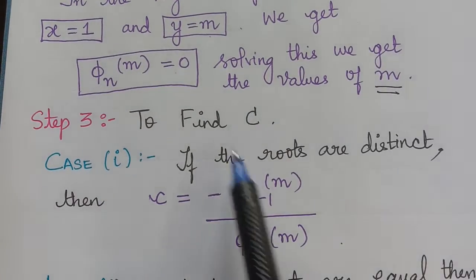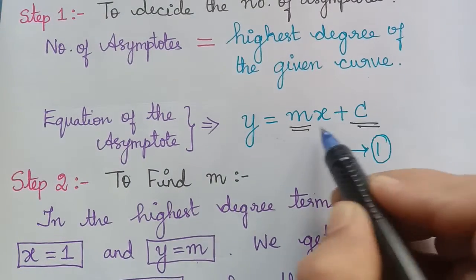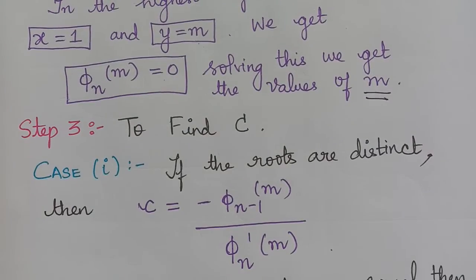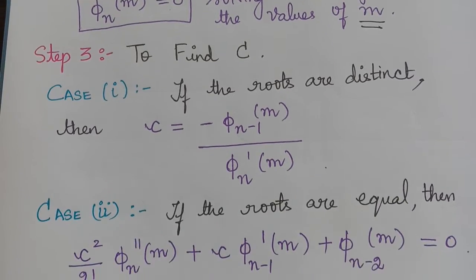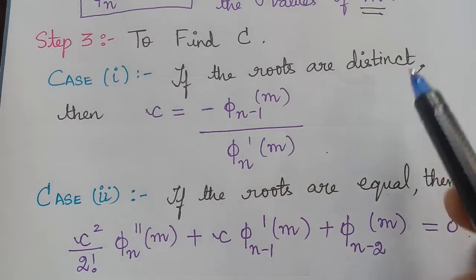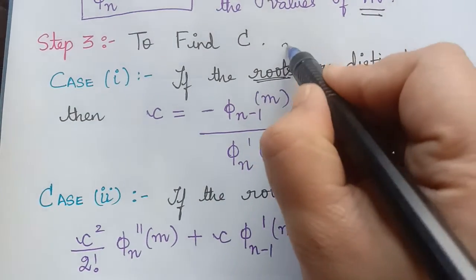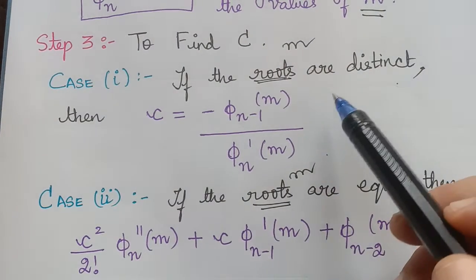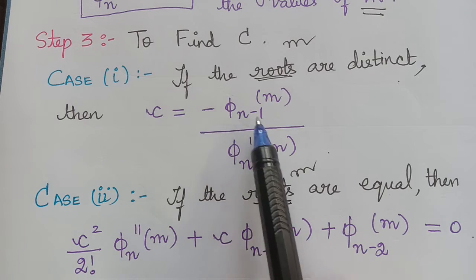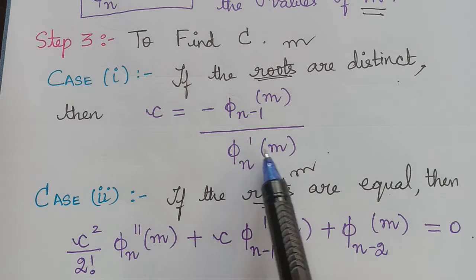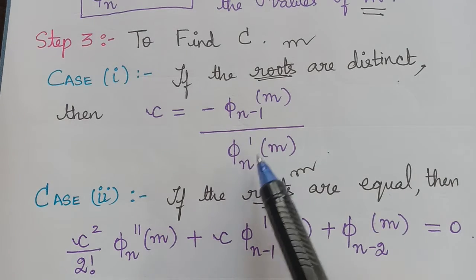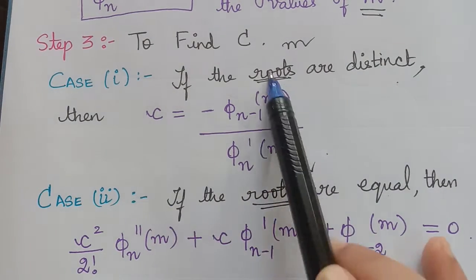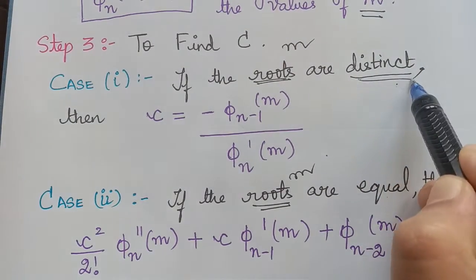The third step is to find the value of c. After finding the value of m, we use it to find c. There are two cases: if the roots are distinct, and if the roots are equal. The roots here represent the values of m. When the values of m are completely distinct, the value of c will be equal to −φₙ₋₁(m) divided by φₙ′(m), where n represents the highest degree and n−1 is the second highest degree.